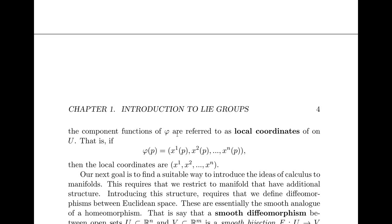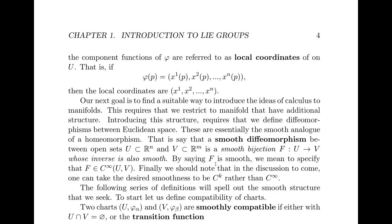And if we take a look at this map and we consider the component functions, these component functions are often called the local coordinates on U. So if phi of P is equal to (x^1(P), ..., x^n(P)), these functions x^1 through x^n are called the local coordinate functions.